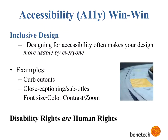Accessibility can be a win-win. Designing for accessibility often makes your designs more usable by everyone. Some examples you're probably familiar with: curb cutouts, which are those slight ramps that enable wheelchairs to get from the sidewalk down to the street level. Initially these were designed for people in wheelchairs, but they also benefit people pushing strollers or people on bicycles. Likewise, closed captioning and subtitles were initially designed for the hearing impaired, but they also benefit people watching television in public places where the sound might be turned off, or people who speak different languages.